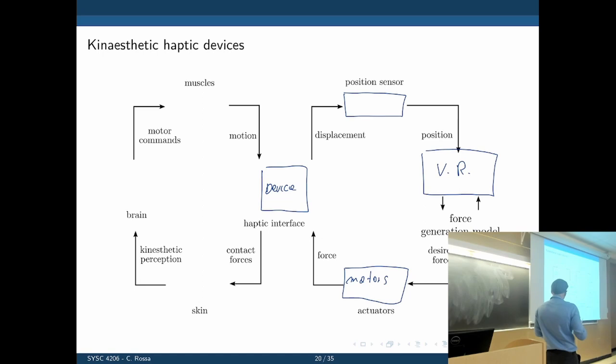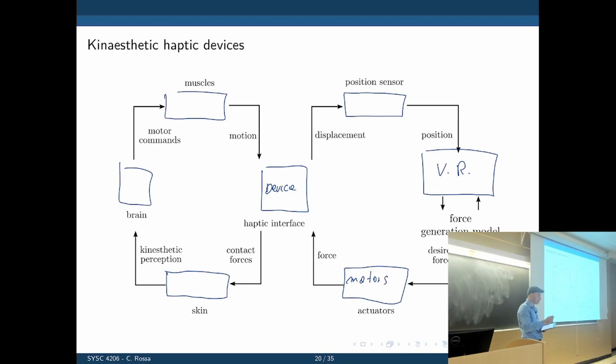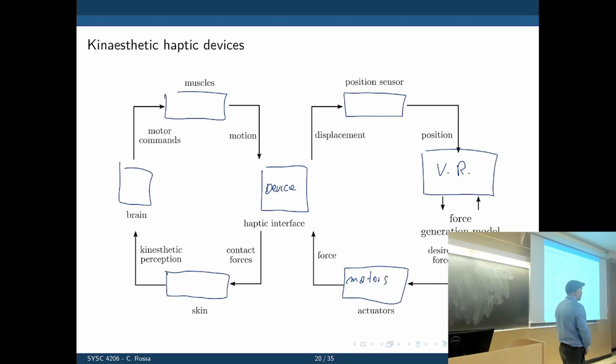From the user side, we first need to detect the forces being applied through the receptors we talked about — through the skin or through the muscles. Then they are processed in the brain, which sends commands to the muscles and adjusts our input accordingly. There are two loops operating in parallel. The input from our side is displacement, and we perceive back the forces.